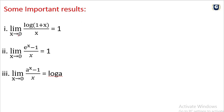The standard results are: limit as x tends to 0 of log(1 plus x) over x equals 1; limit as x tends to 0 of e to the power x minus 1 by x equals 1; and limit as x tends to 0 of a to the power x minus 1 by x equals log a. These are very important results.